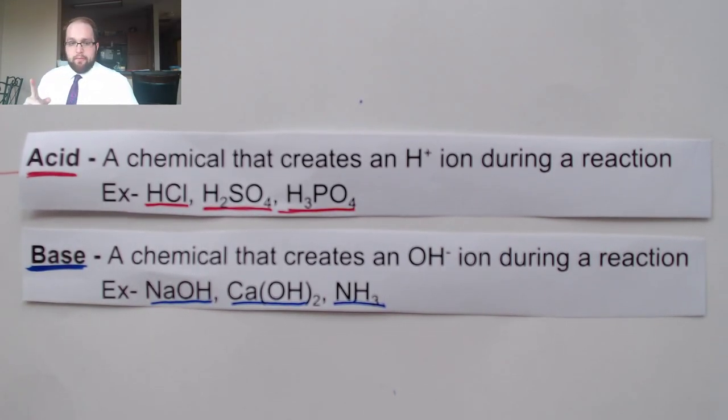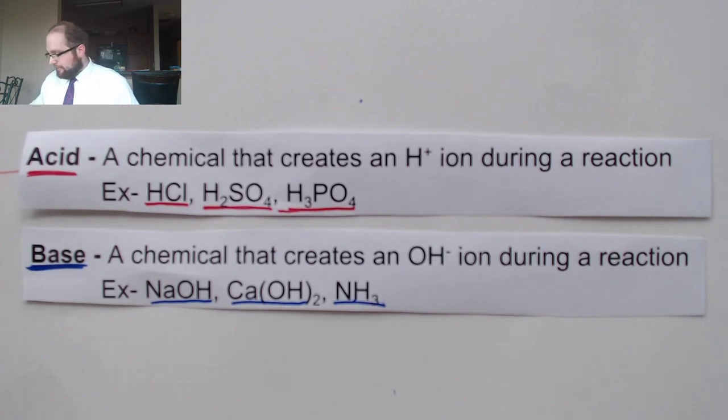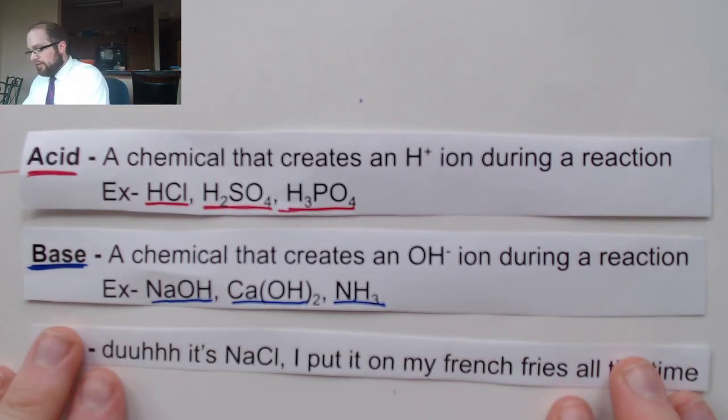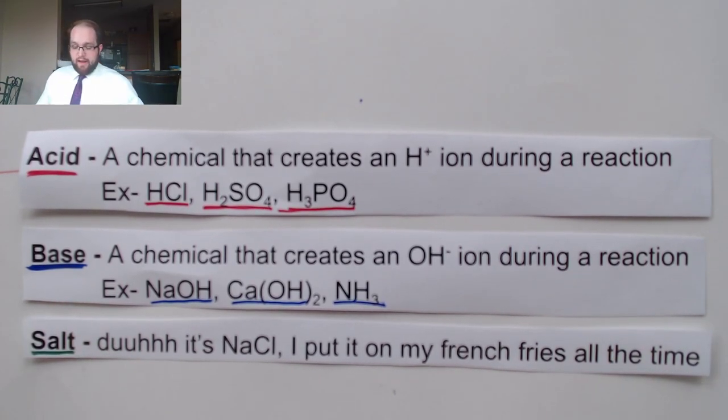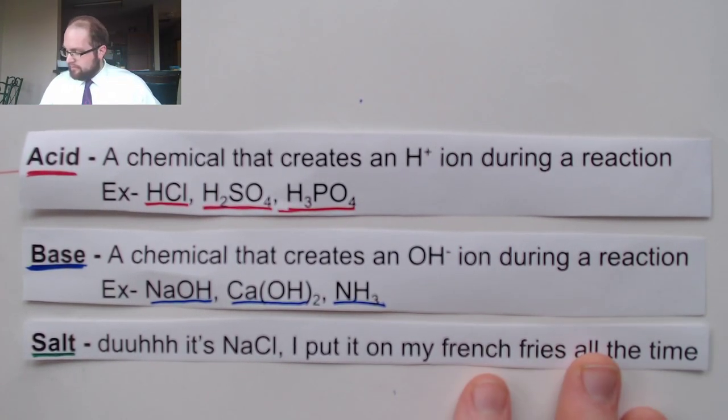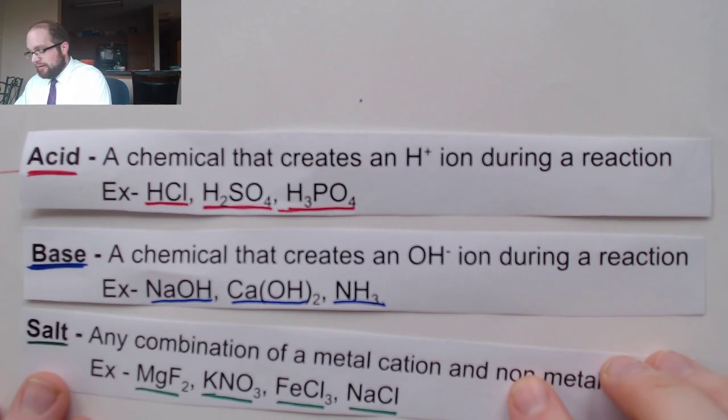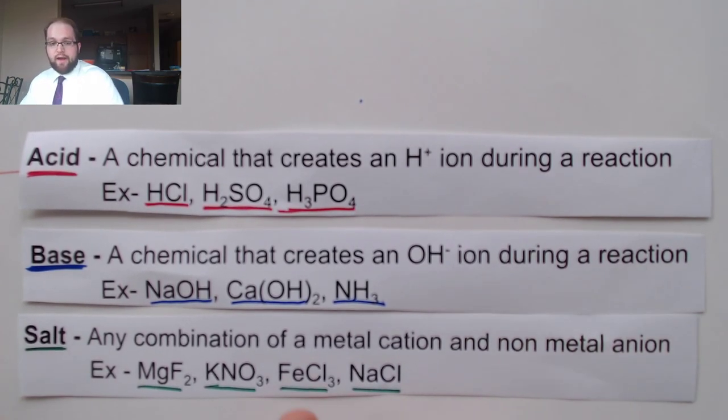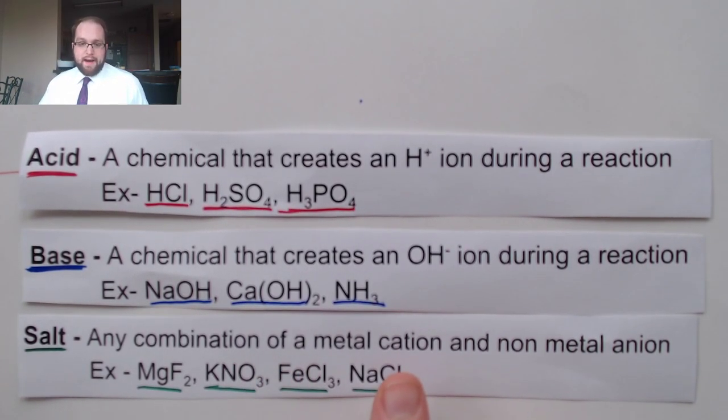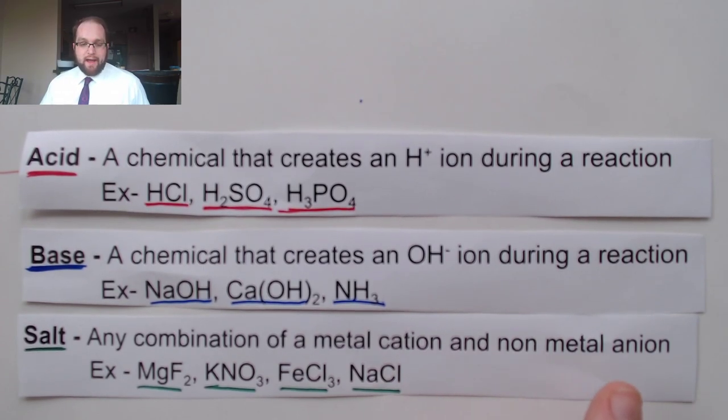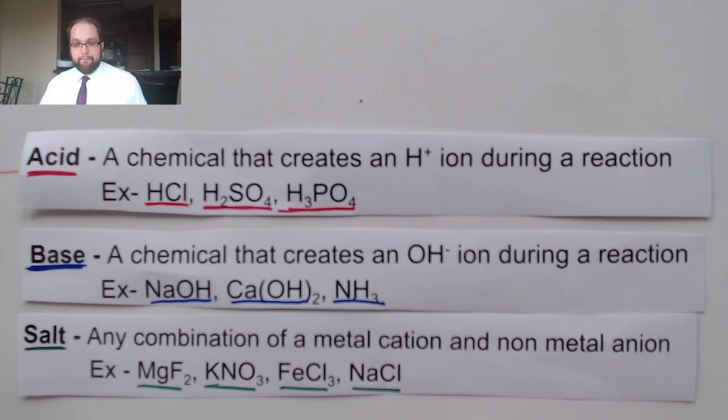Now there is one more key vocab term when you talk about acids and bases, and that is the chemical salt. And now we all know what salt is, that like duh it's just NaCl I put it on my french fries all the time. Oh sorry, that was Mr. Bartlett's basic self popping out there. The actual chemistry definition for salt is any combination of a metal cation and a non-metal anion. It's basically an ionic compound.